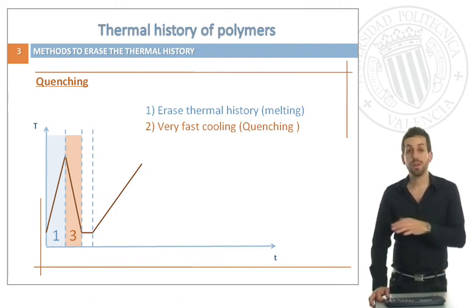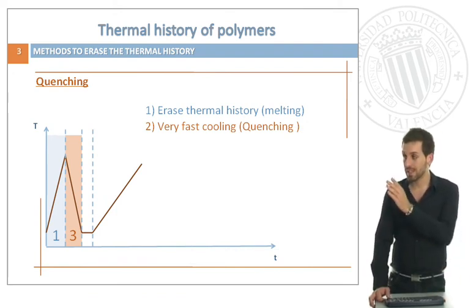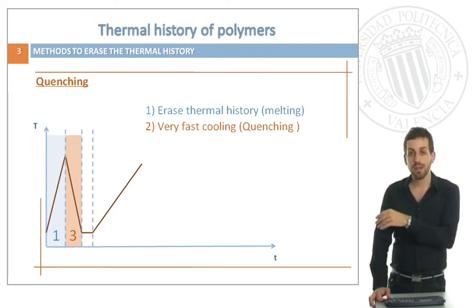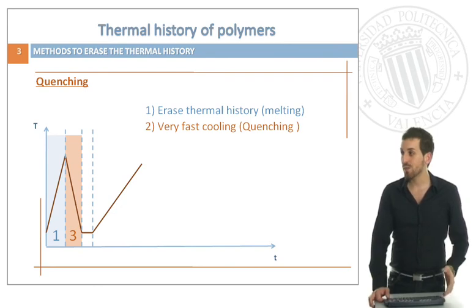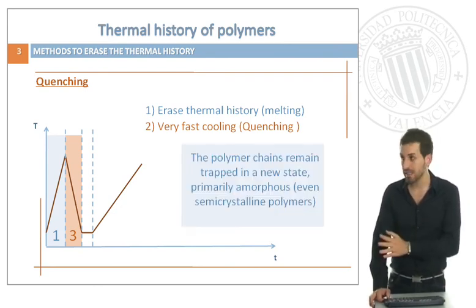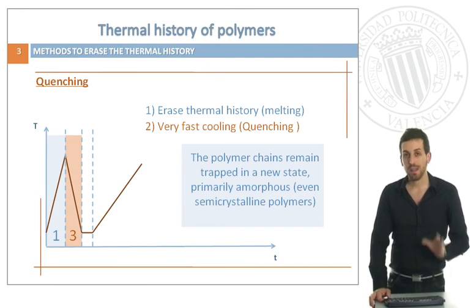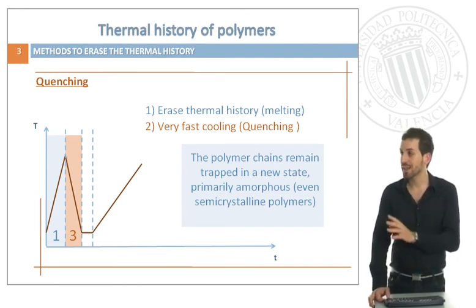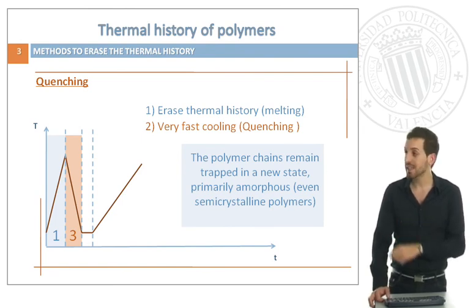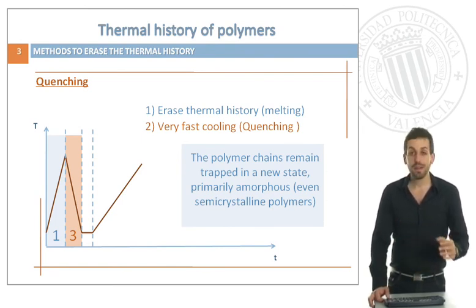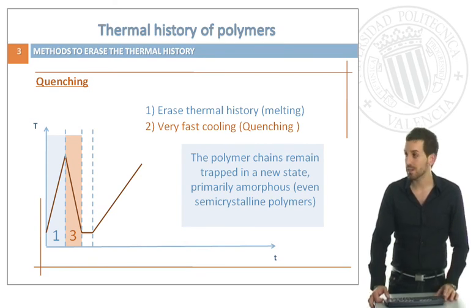Let's compare it to the quenching. We will first heat and melt our polymer in order to erase this thermal history and then we will apply a very fast cooling — this is called quenching. What will happen here is that the polymer chains will remain trapped in a new state, primarily amorphous, even for semi-crystalline polymers.